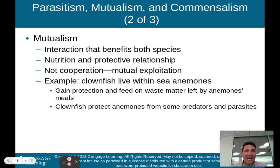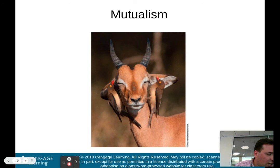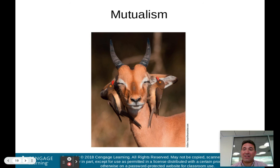Here's another example: oxpeckers that feed on ticks that infect the impala. The oxpeckers get food while the impala gets its ticks removed — the oxpeckers eat the ticks. It's a win-win situation for both species. That is the definition of mutualism.